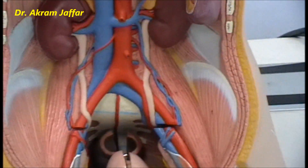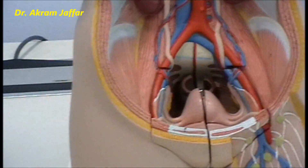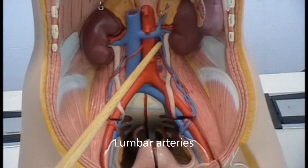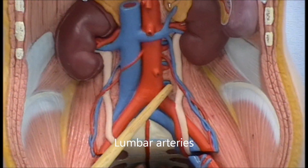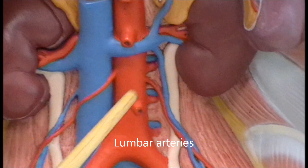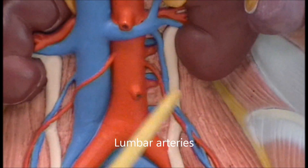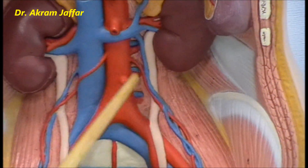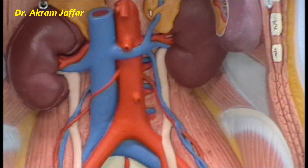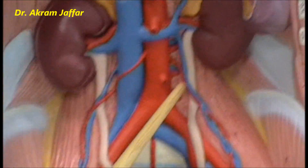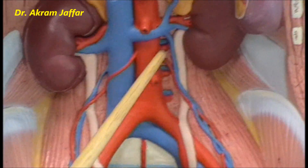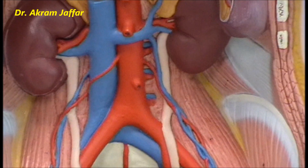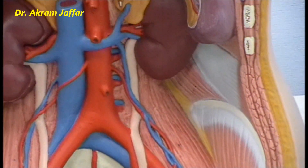Other branches of the abdominal aorta are parietal branches, such as the lumbar arteries. Usually there are four lumbar arteries, because the aorta bifurcates at the level of L4. They supply the wall of the abdomen. It should not be forgotten that they also send radicular branches to the spinal cord and the cauda equina.